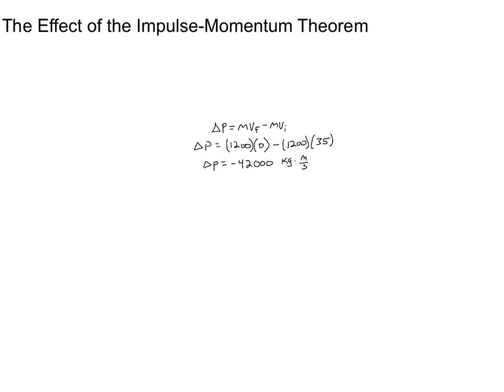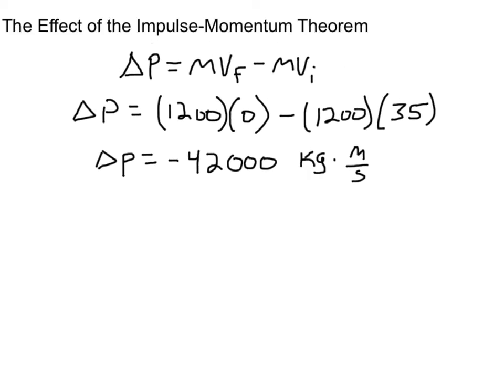That means that we're going to change the car's momentum. And that car's momentum, regardless of the way that we stop it, is going to change by 42,000 kilogram meters per second. So if we have a 1200 kilogram car, we're going to bring it to a stop, so its velocity is zero, from an initial velocity of 35 meters per second, we're going to get a change in momentum of 42,000 kilogram meters per second.